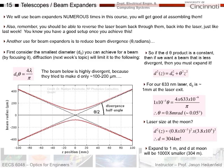So if the d-theta product is a constant, then if we want a beam that is less divergent, then you must expand it. And so if I want to measure the divergence over distance, I can use this equation. This says that the diameter squared at any position z is equal to the original diameter d₀ plus my divergence angle theta in radians at the distance z squared. So as I go further, my diameter is getting bigger.